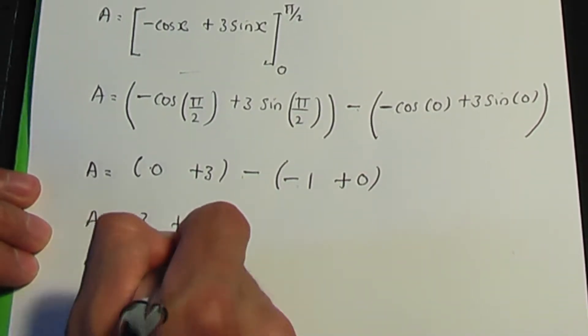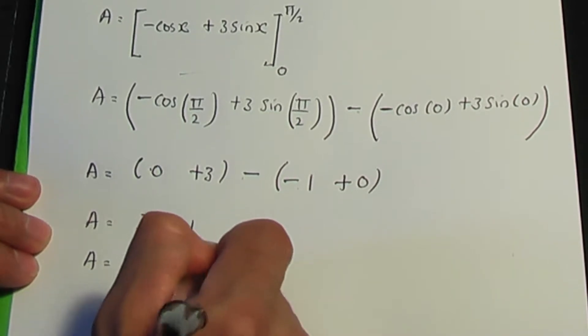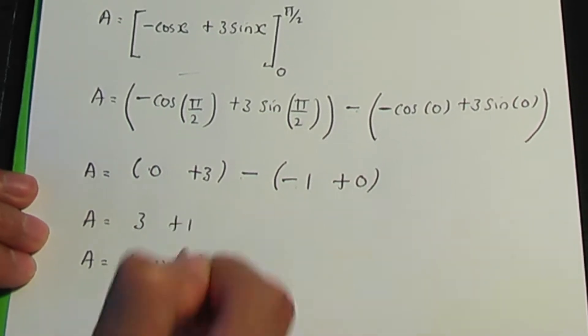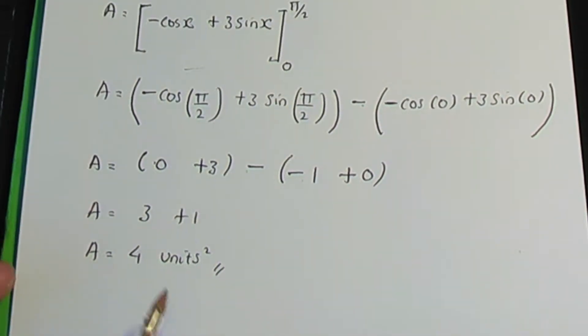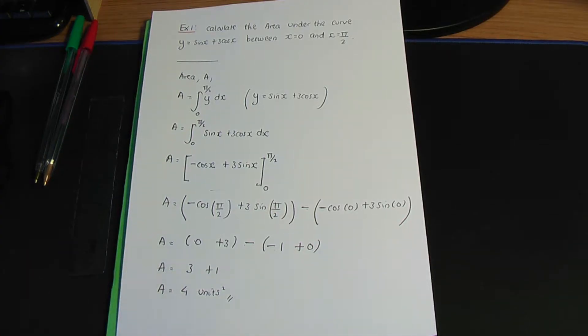Simplifying: three plus zero is three, and minus times minus one is plus one, giving us four units squared. That's the answer to the first problem.